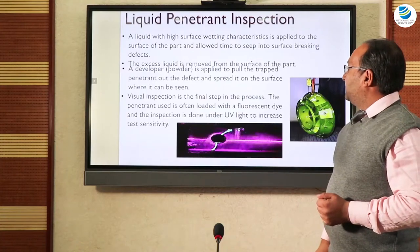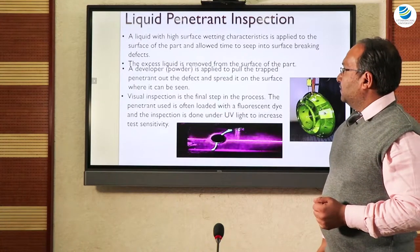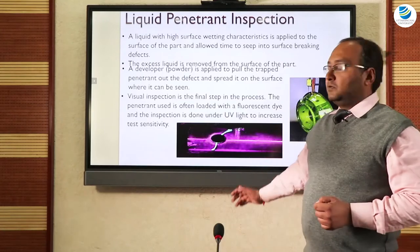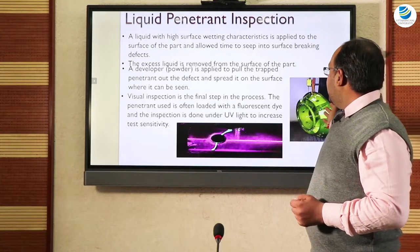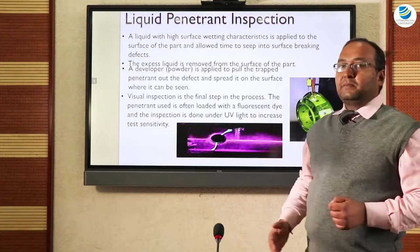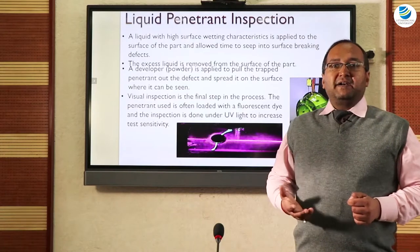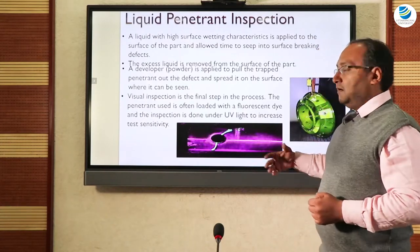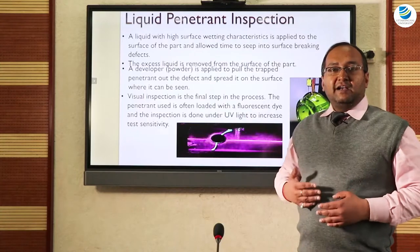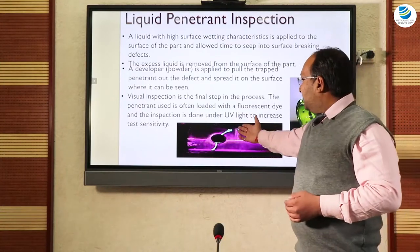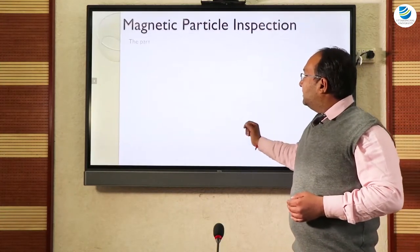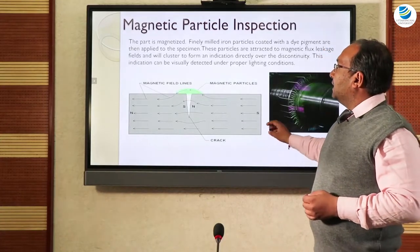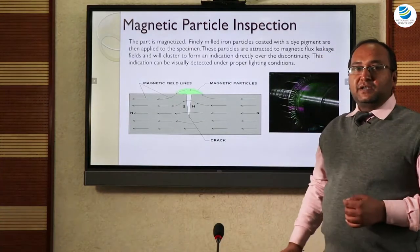The second technique is liquid penetrant inspection. Objects are coated with a particular liquid penetrant, and defects can be seen under ultraviolet light — they brighten up so that they can be visualized clearly. The next technique is magnetic particle inspection, which has a similar concept to liquid penetrant testing but uses a magnetic field instead.